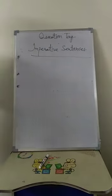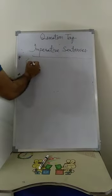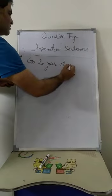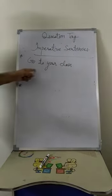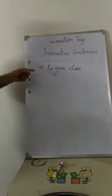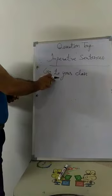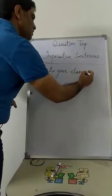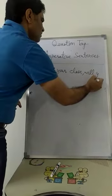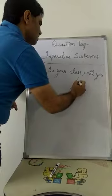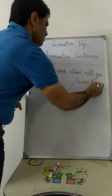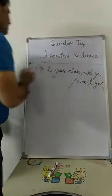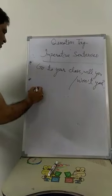Now we will have some more examples: Imperative sentences. This is an example of an imperative sentence. Since it is a positive imperative sentence, we can use 'will you' or 'won't you'.